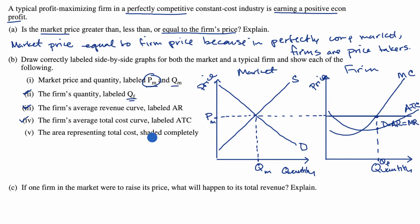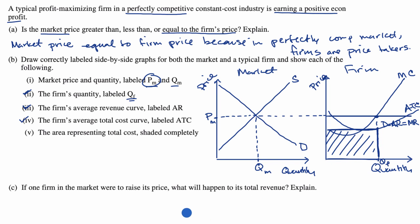The area representing total cost shaded completely: total cost is the cost per unit (average total cost) times the total number of units, which is Q sub F. So total cost is that shaded rectangular area. If they were asking for total economic profit, we would shade the area above that, but they're asking for total cost — which is that shaded area.